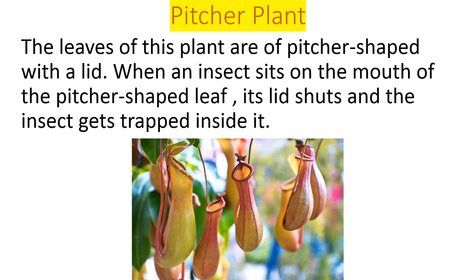The pitcher plant: the leaves of this plant are shaped like a pitcher — like a pot — and there is a lid on top. You can see the shape in the slide. Whenever an insect lands on its corner, the lid closes suddenly and the insect gets trapped inside.